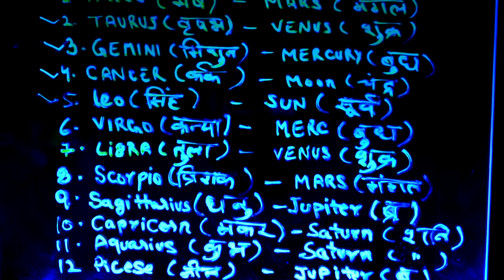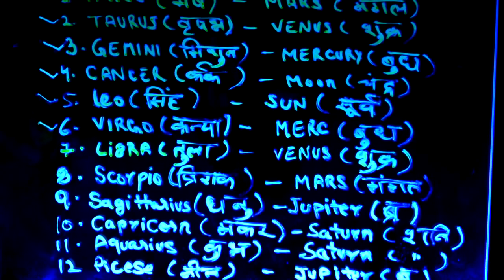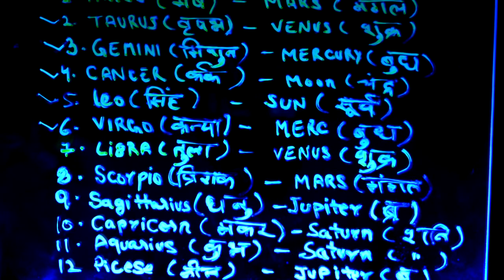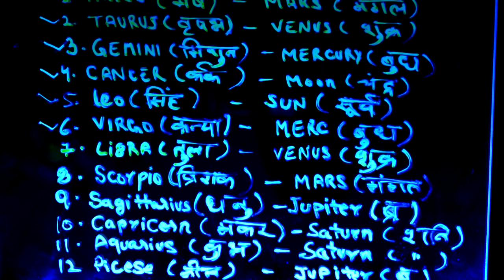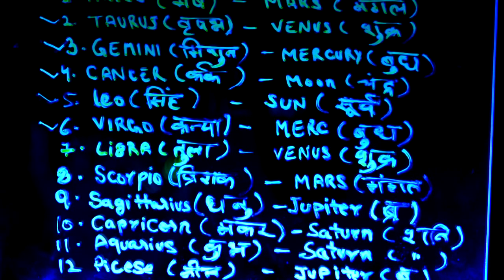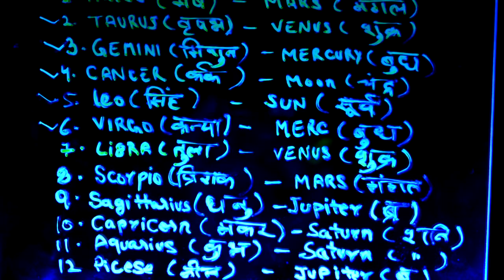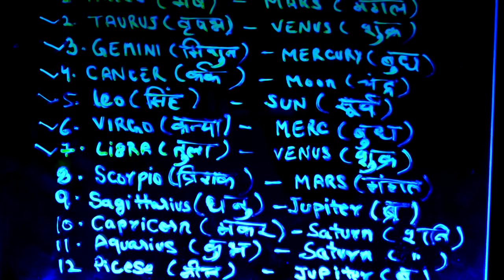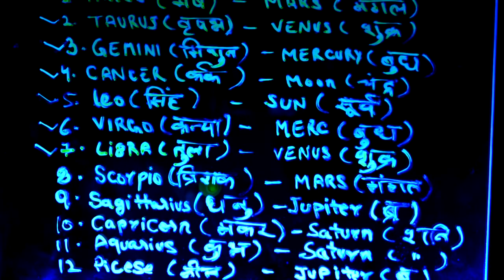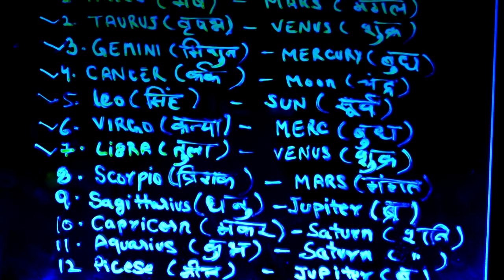Then we have Virgo, Hindi name Kanya, and Mercury — Budha — is the lord. Then we have Libra, which is Tula in Hindi, and the lord is Venus or Shukra. Then we have Scorpio — Vrishchik in Hindi — and the lord is Mars, or Mangal.